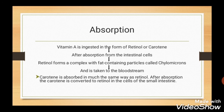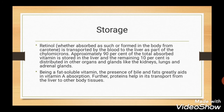Vitamin A is ingested in the form of Retinol or carotene. After absorption from intestinal cells, Retinol forms a complex with fat-containing particles called chylomicrons and is taken into the bloodstream. Carotene is absorbed in the same way as Retinol; after absorption, carotene is converted to Retinol in the cells of the small intestine. Retinol is then transported by blood to the liver as part of the chylomicrons. Approximately 90% of total absorbed vitamin is stored in the liver and the remaining 10% is distributed to other organs. Bile and fats greatly aid in Vitamin A absorption, and proteins help in its transport from liver to other body tissues.